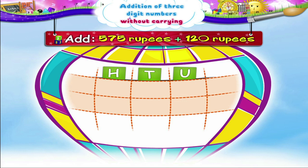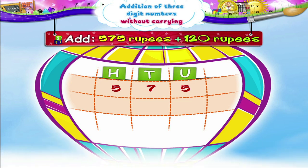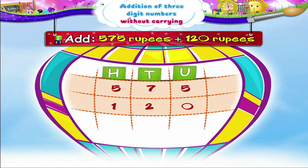First, we shall arrange the numbers in their proper columns. Let's write the digit 5 in the hundreds column, 7 in the tens column, and 5 in the units column. From the number 120, digit 1 is written below 5 in the hundreds column, digit 2 is written below 7 in the tens column, and 0 is written below 5 in the units column.